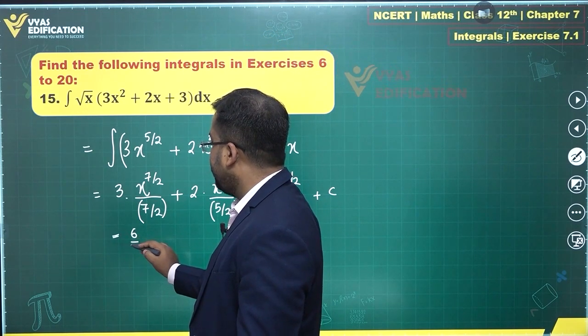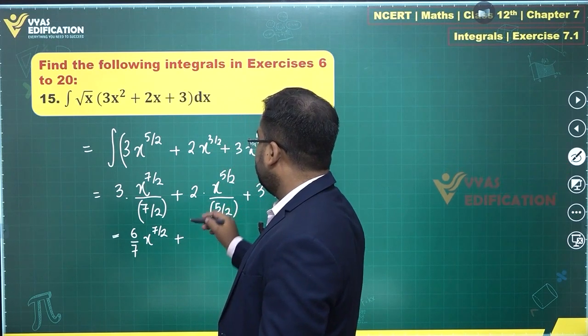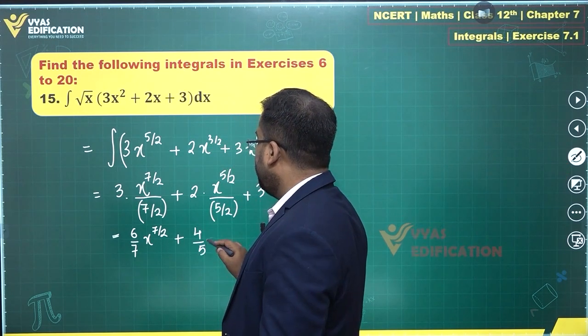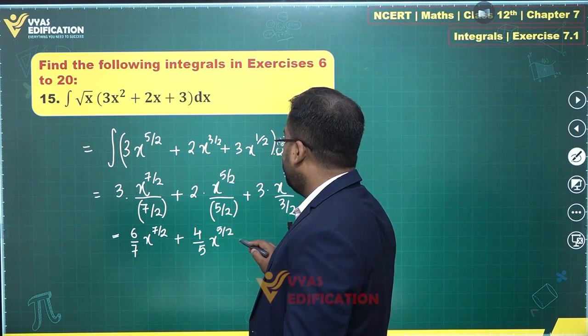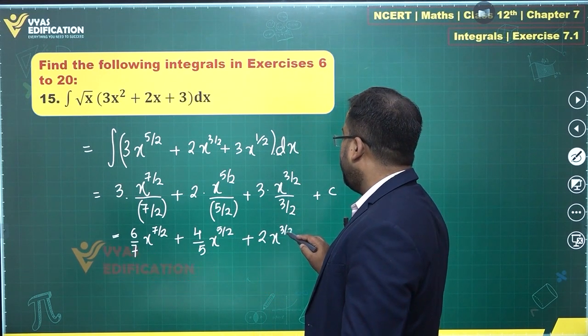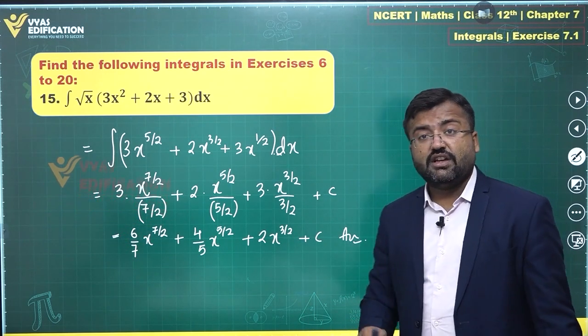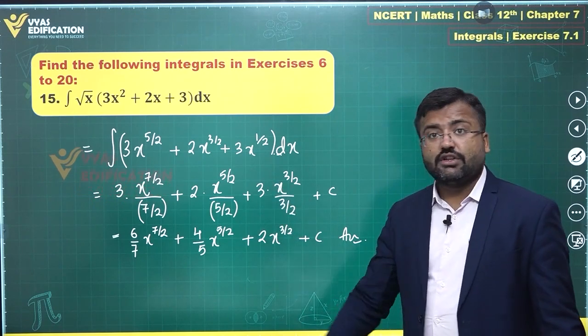The 7/2 will convert to 2/7 in numerator. This is 6/7 x power 7/2 plus this is 4/5 x power 5/2 plus this is 2 x power 3/2 plus c, plus the constant of integration. And that's the answer for this question as you can see.